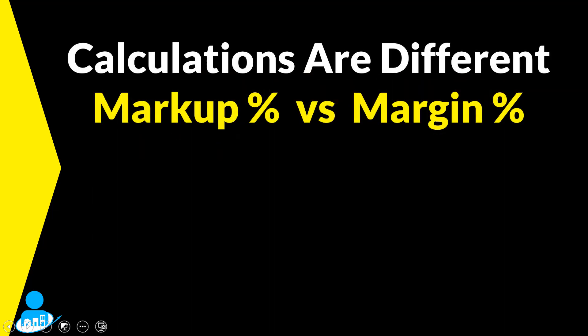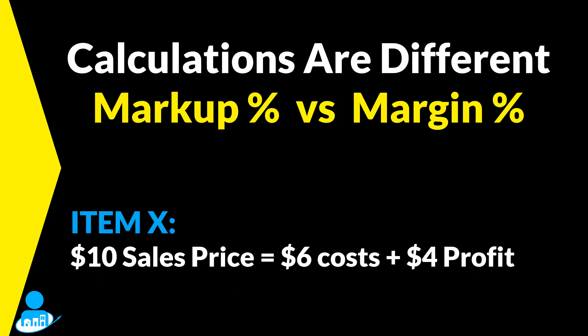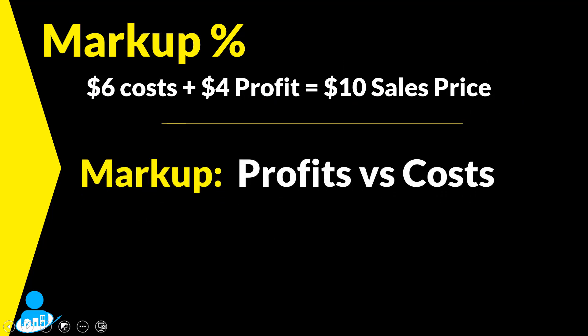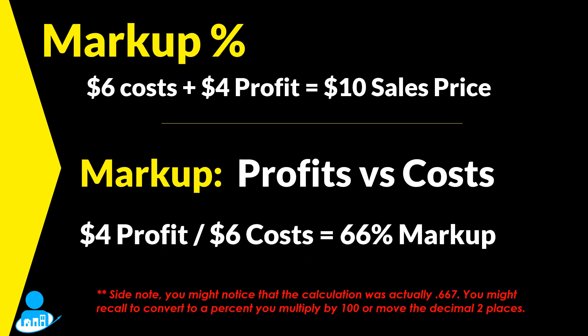The first thing you need to understand is that the calculations for computing the two are very different, even though you're using the exact same information. For our examples, we are going to use Item X. Item X sells for $10 and has $6 in product costs, and therefore you're making $4 in profit every time you sell one. Your markup percentage is determined by how much your profit is versus your cost. So to figure out our markup percentage, we take our $4 in profit and divide it by $6 in costs — and you find out that you marked up this product by 66%.